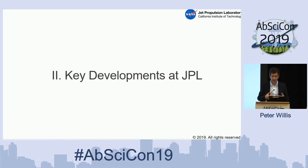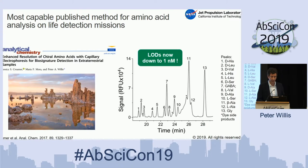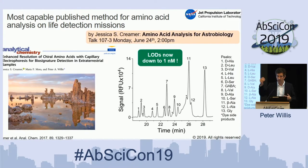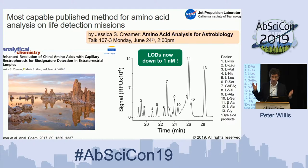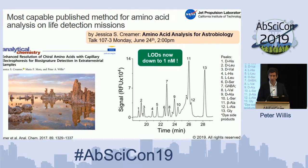I hope many of you were able to attend Jessica Creamer's talk on Tuesday. She described how at JPL we've pushed the envelope and now have developed the most capable method for doing amino acid analysis on spaceflight missions. Her work was designed to simultaneously make measurements of all different types of amino acids and different chiralities, in a really sensitive way. The take-home message is all amino acids are different, and if you want to analyze them all, you really have to do a lot of work to tease them apart. Since the time of that publication, she's actually pushed the limit of detection down to one nanomolar for most species. We meet all the requirements for amino acids.